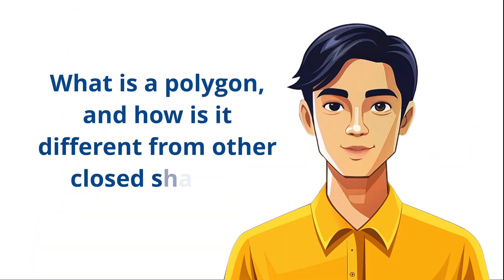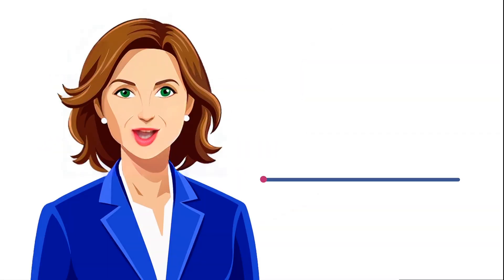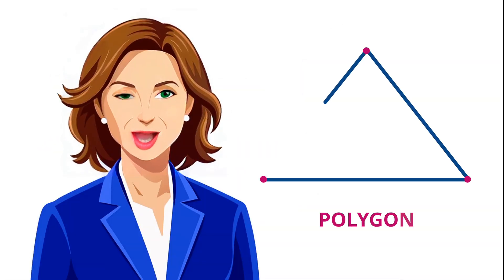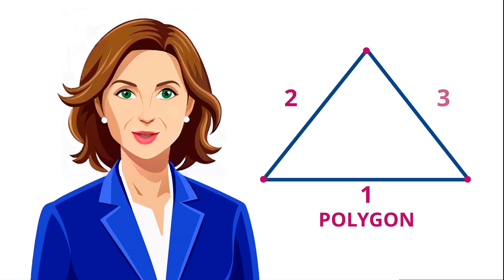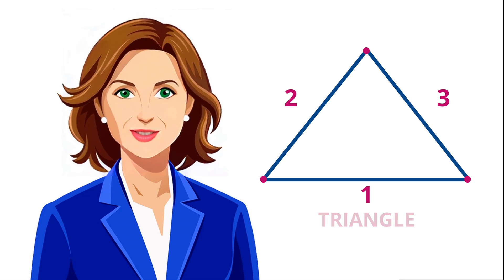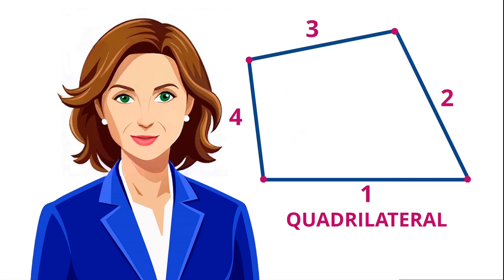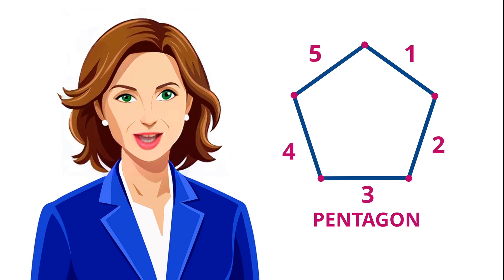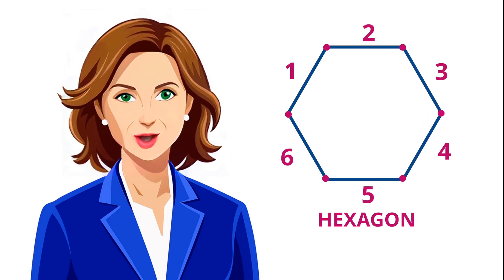What is a polygon and how is it different from other closed shapes? A polygon is a specific type of closed shape with straight sides and multiple angles. Polygons are classified by the number of sides they have: triangle — three sides, quadrilateral — four sides, pentagon — five sides, hexagon — six sides, and so on.